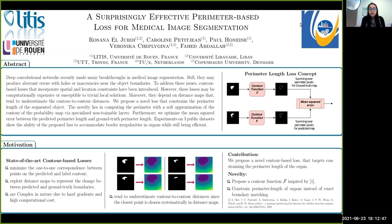Contour-based losses often aim to minimize the one-to-one correspondence between points on the predicted and labeled contours. Moreover, they exploit distance maps in order to reveal the change between the predicted and ground-truth boundaries.